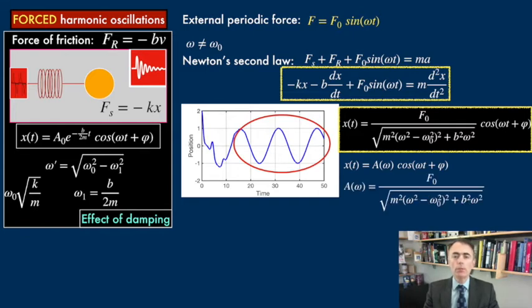Here the amplitude of the oscillations is expressed in terms of the parameters of the system. It depends on the magnitude of the periodic force, it depends on the damping, it depends on the mass of the bob, and it depends on the natural frequency of the oscillator.